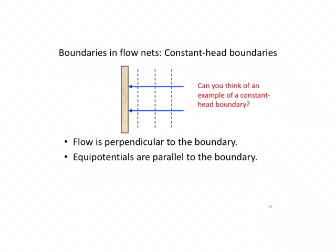The first rule is to identify the types of boundaries present, whether those are constant head boundaries or no-flow boundaries. With no-flow boundaries, flow is parallel to the boundary, and therefore the equipotentials, which have to be perpendicular to the flow, have to be perpendicular to that particular boundary. With constant head boundaries — for example, just underneath a reservoir or a river where we know the water level — flow is always perpendicular to the boundary and the equipotentials are parallel to the boundary.